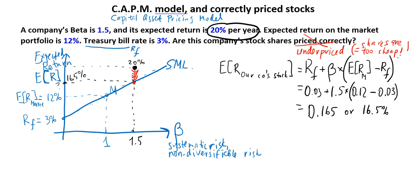So in a way, things seem kind of backwards graphically: over the line means underpriced. A reverse situation would be if the information given implies a point somewhere under the Security Market Line. Under the line would imply the opposite situation — the shares of stock are way too expensive.